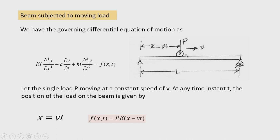V is taken as uniform velocity. If V is not uniform — say the load P is accelerating — then the location of the moving load can be represented as a₀ + a₁t + a₂t². Here a₀, a₁, a₂ are coefficients that describe the forward motion of the moving load.